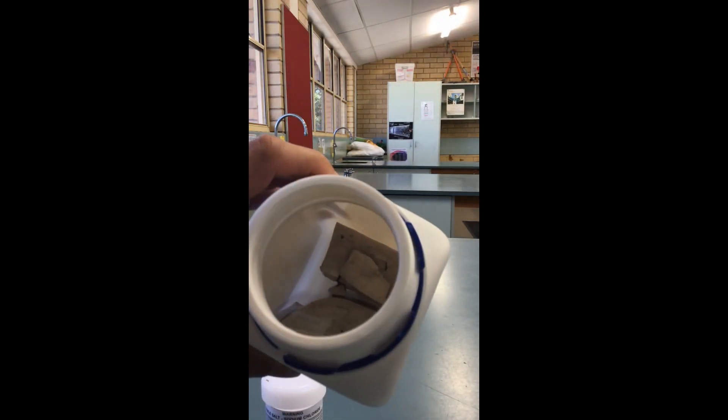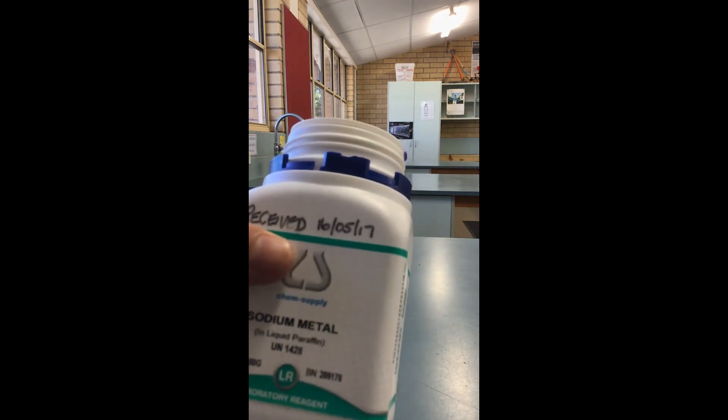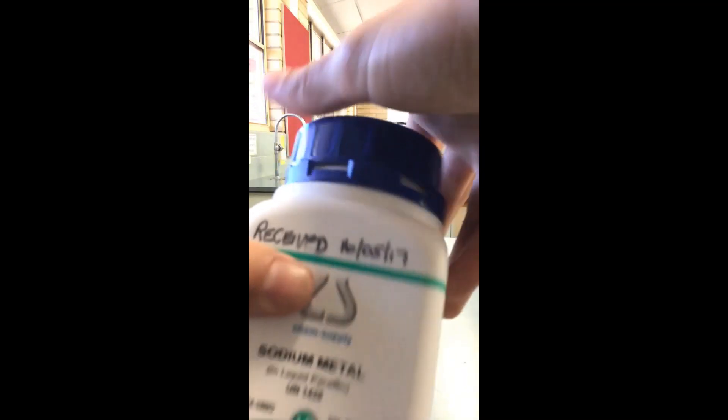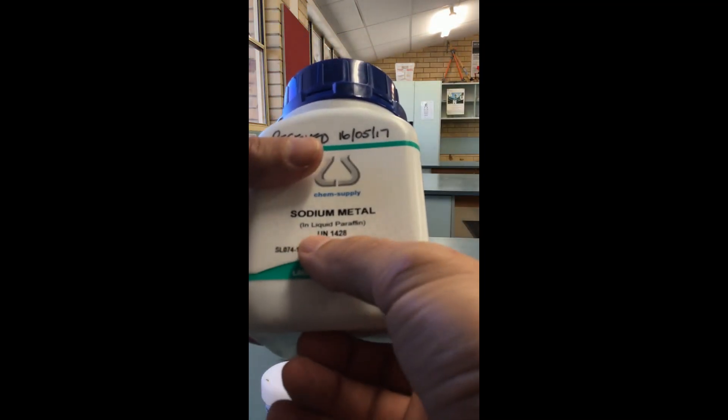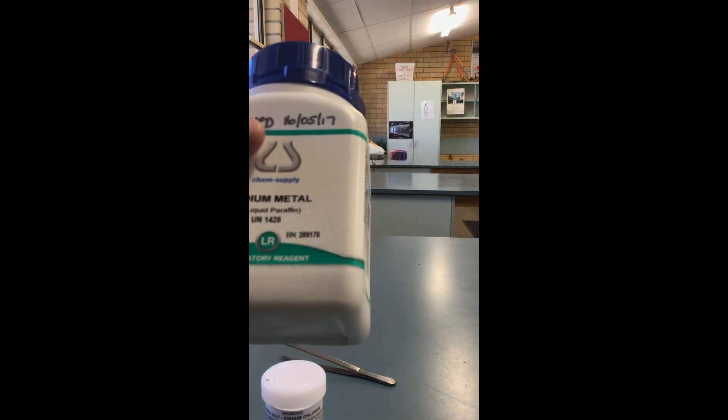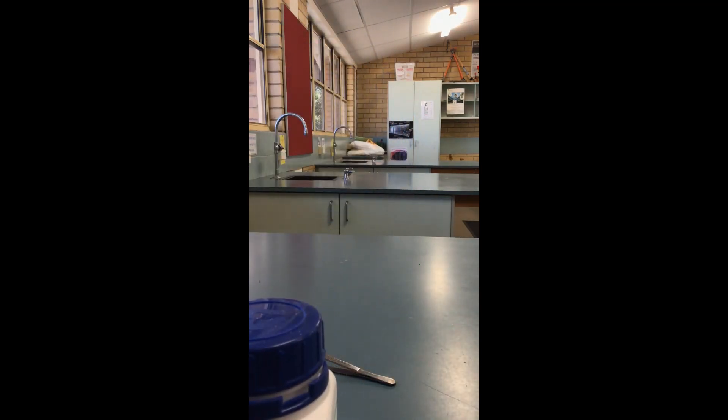And that's to protect the sodium metal. Now why does the sodium metal need protecting? It's very reactive. Sodium is in the first group on the periodic table, which means it's a very reactive metal.